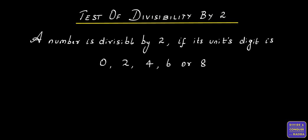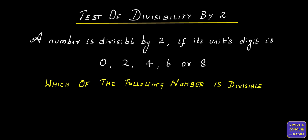Now let's check which of the following numbers is divisible by 2 based on the above rule. The first number that we have is 483. The number in the unit's digit is 3, which doesn't satisfy the above rule. Therefore, 483 is not divisible by 2.